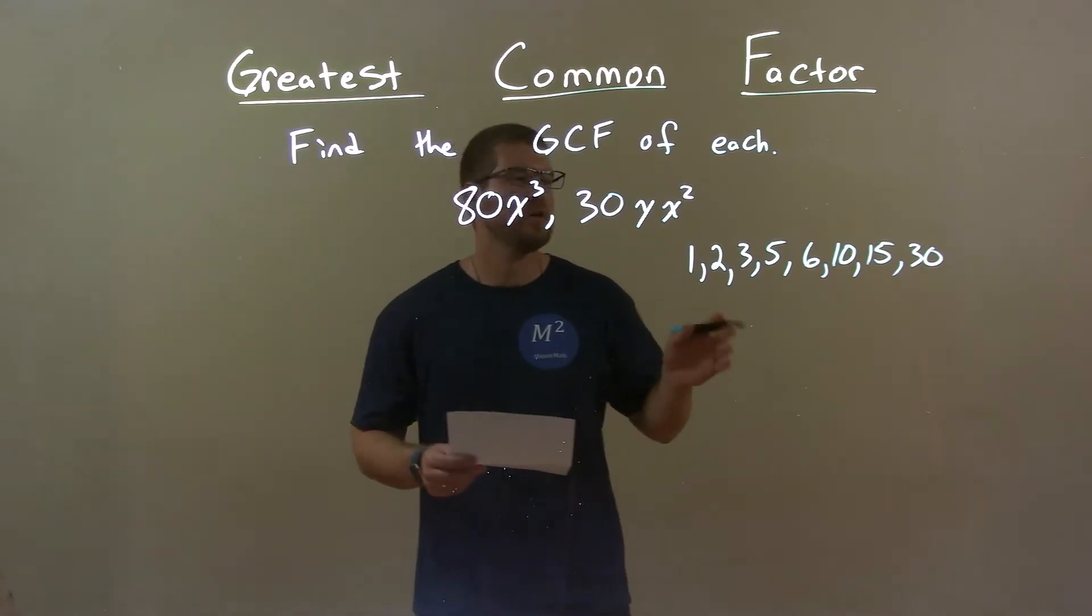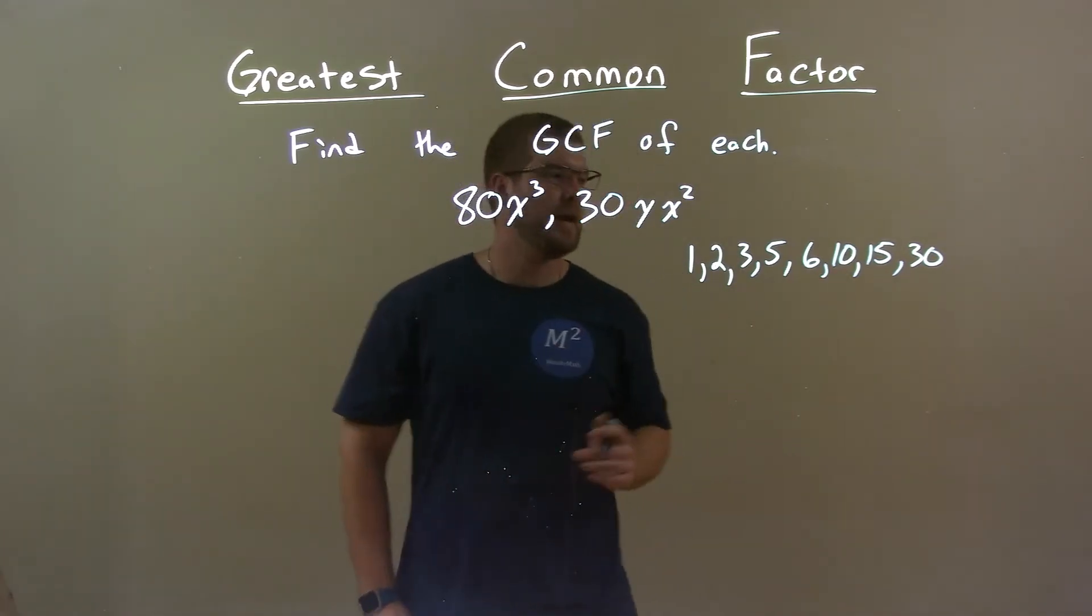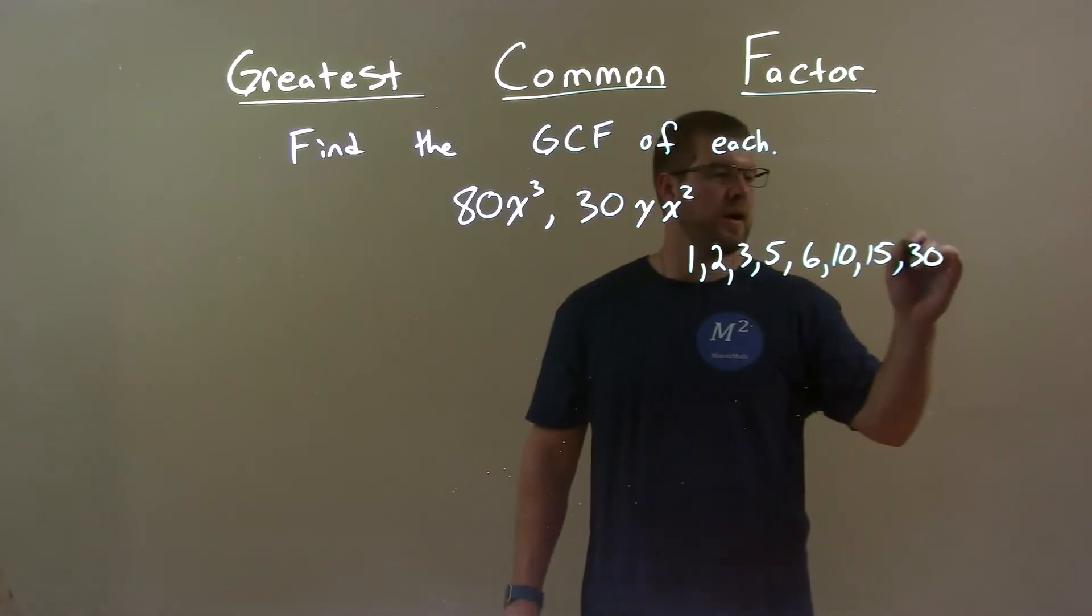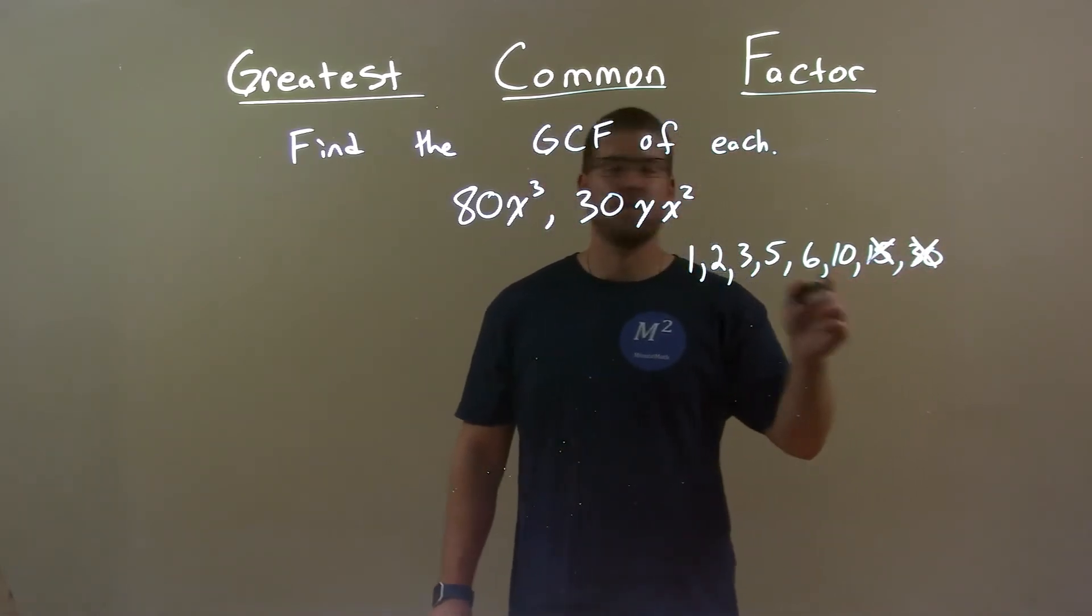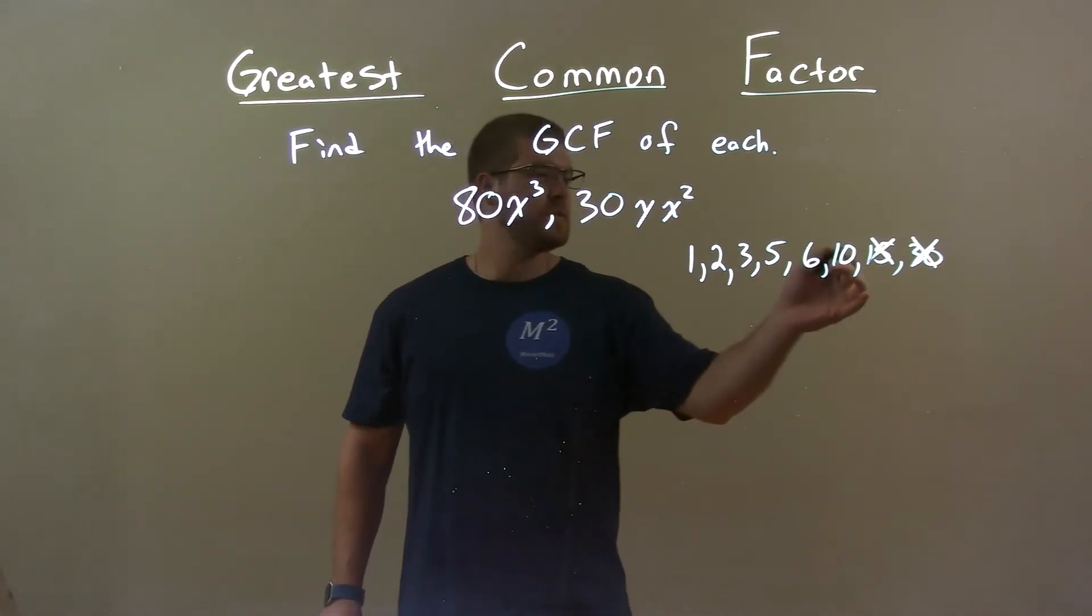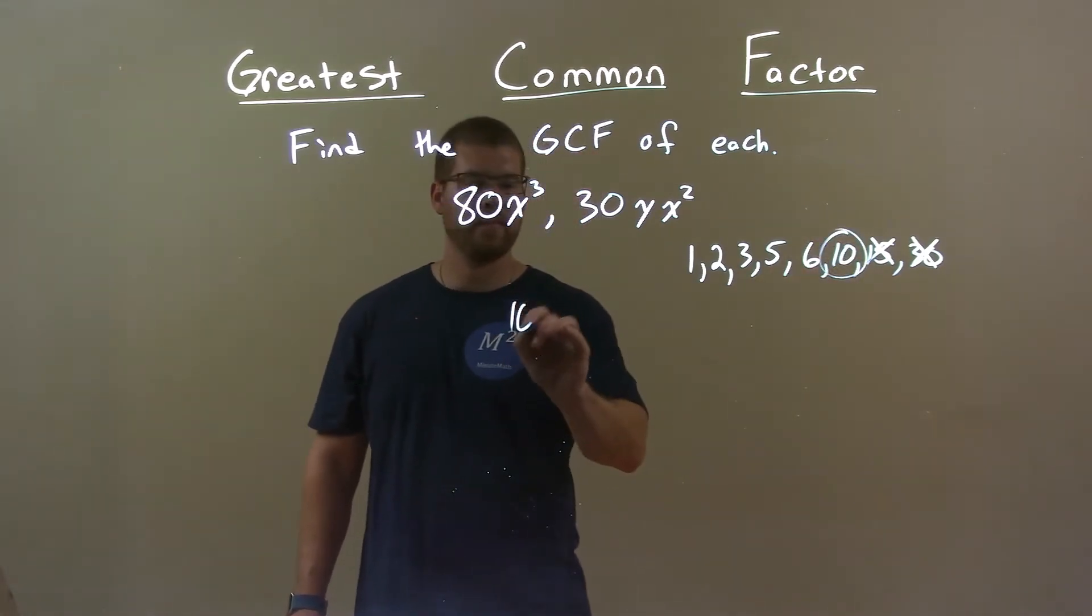Now, from there, I find the largest one of these that also goes into 80. Well, 30 doesn't go into 80 because it goes into 60 and 90. 15 goes into 75, but not 80, but 10. 10 goes into 80 eight times. So, 10 is the number I'm looking for that goes into both.